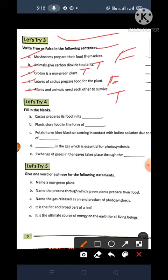Now E. Plants and animals need each other to survive. Yes. Both are depending on each other. So that's why this is true. I hope you understood all these true and false.